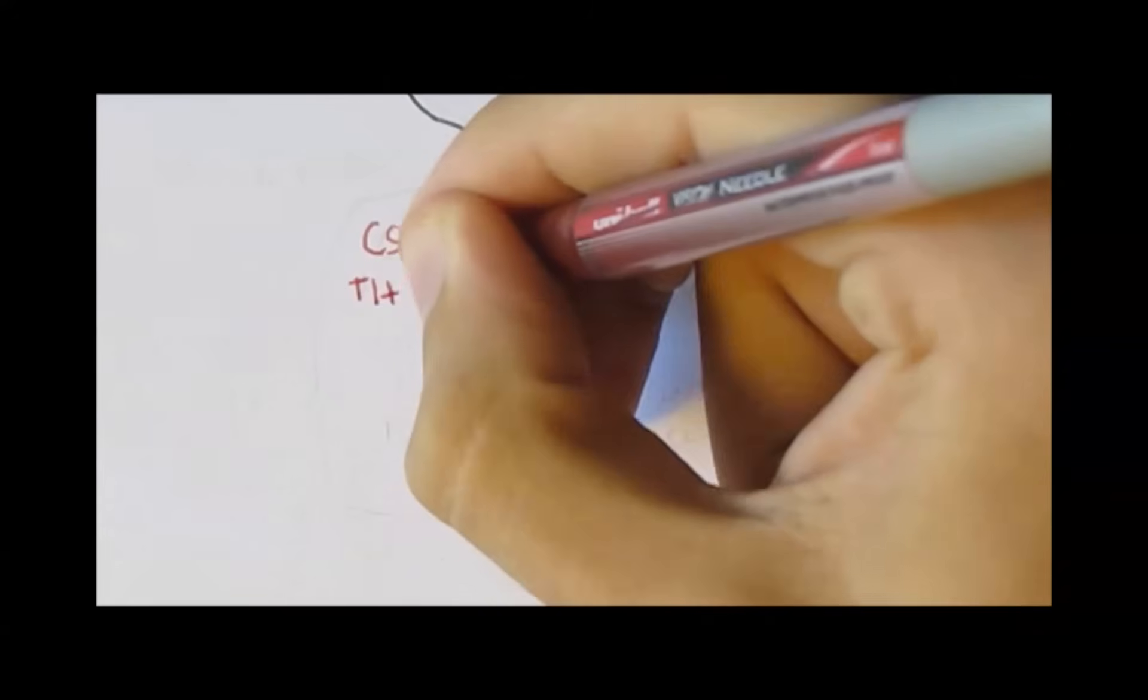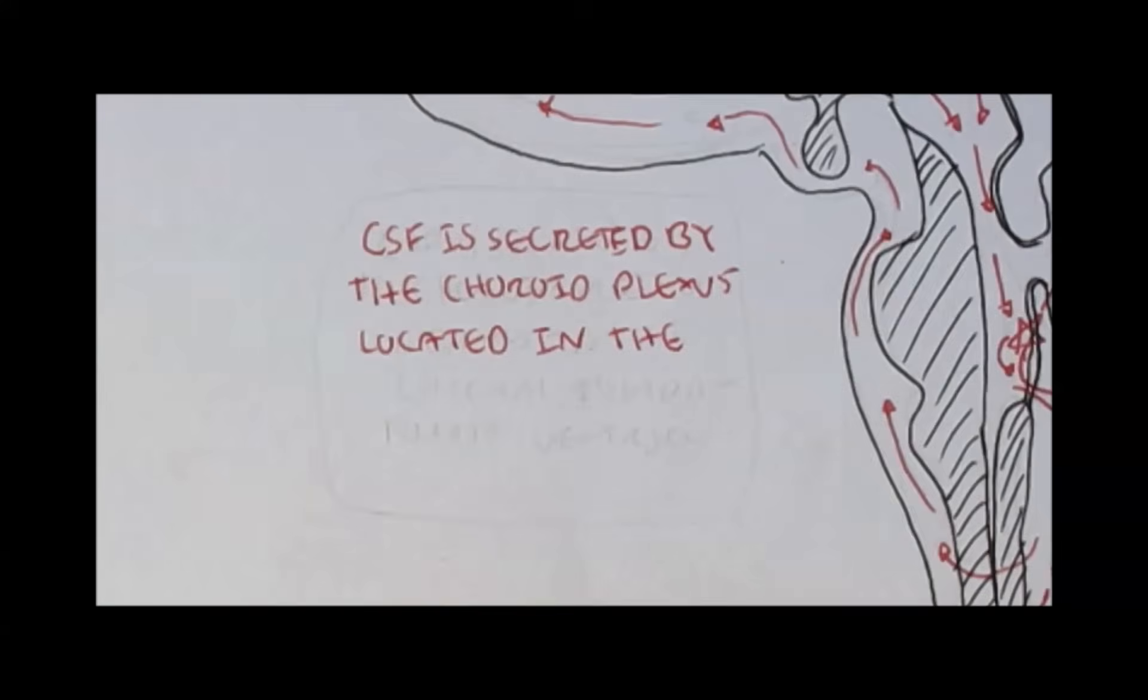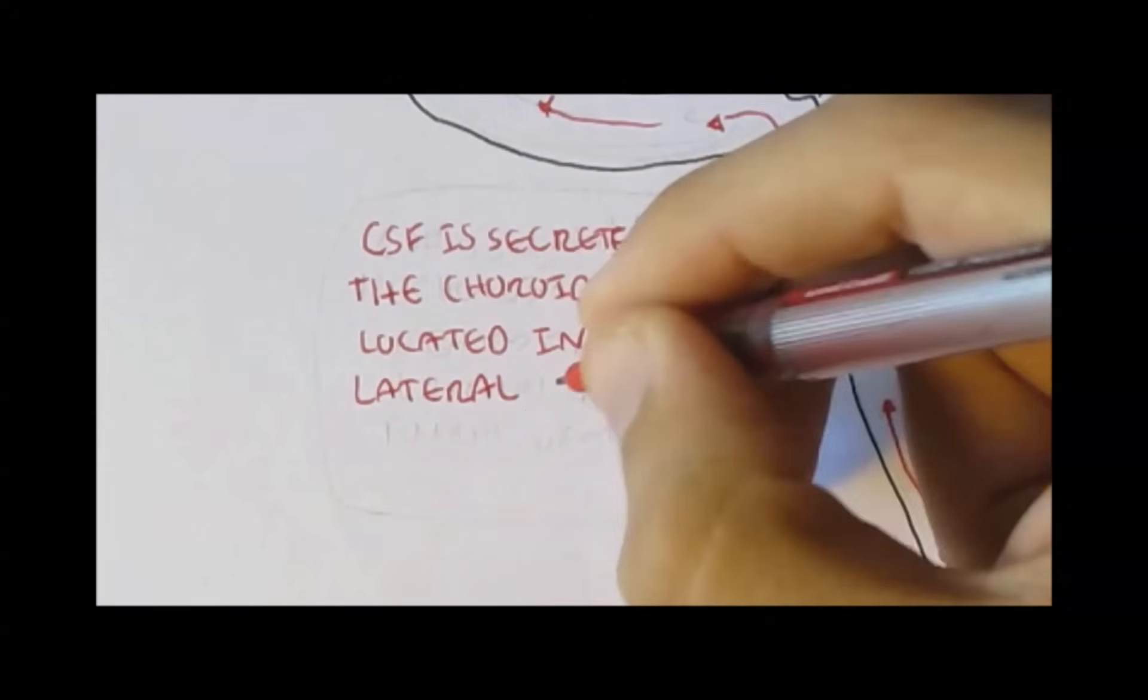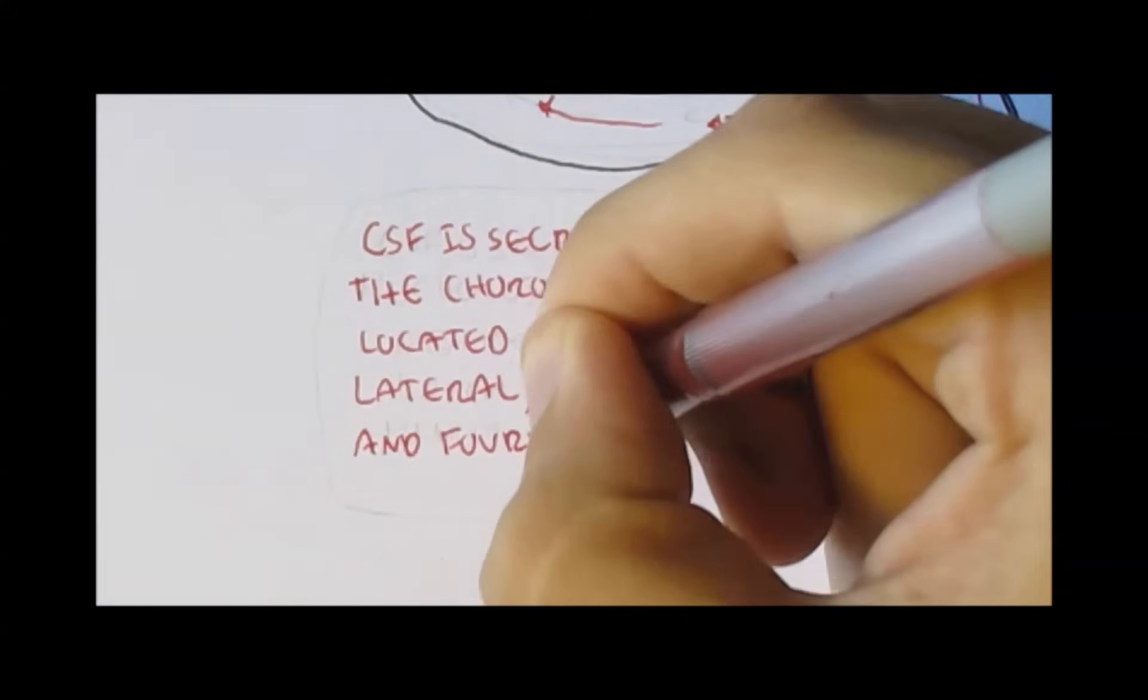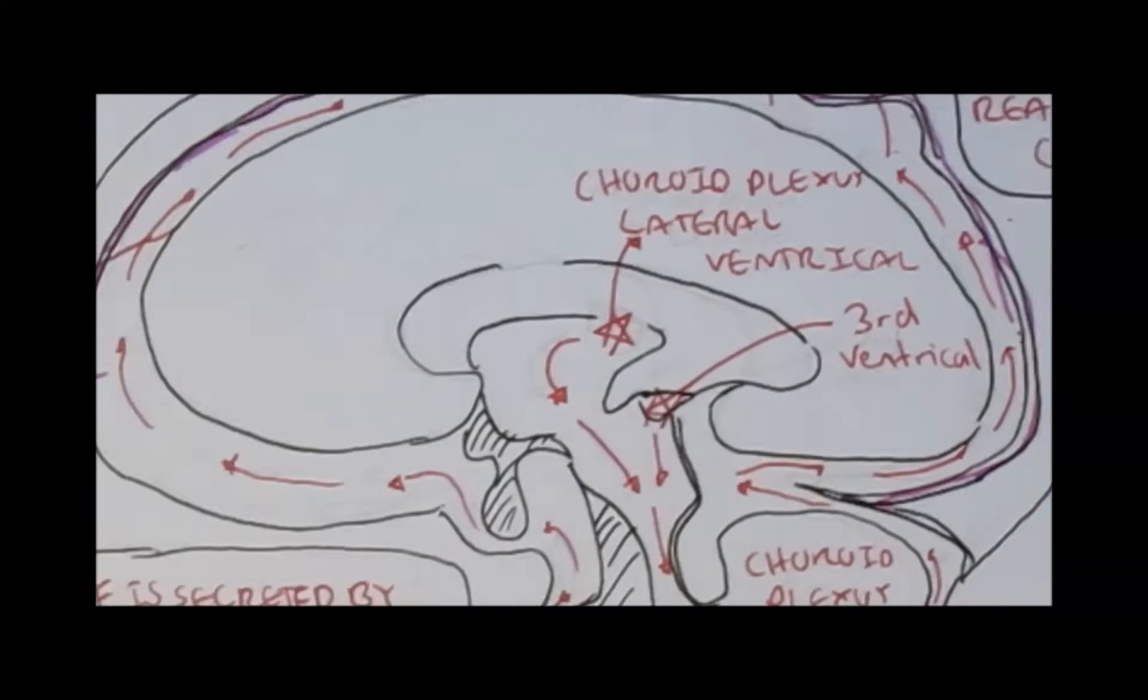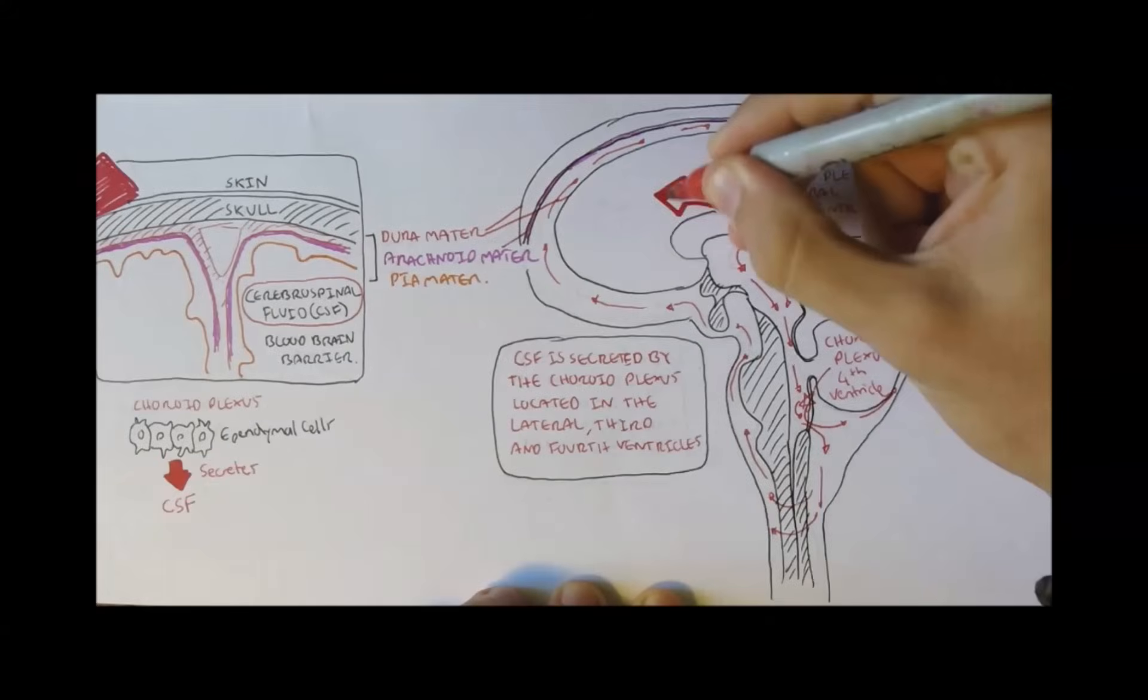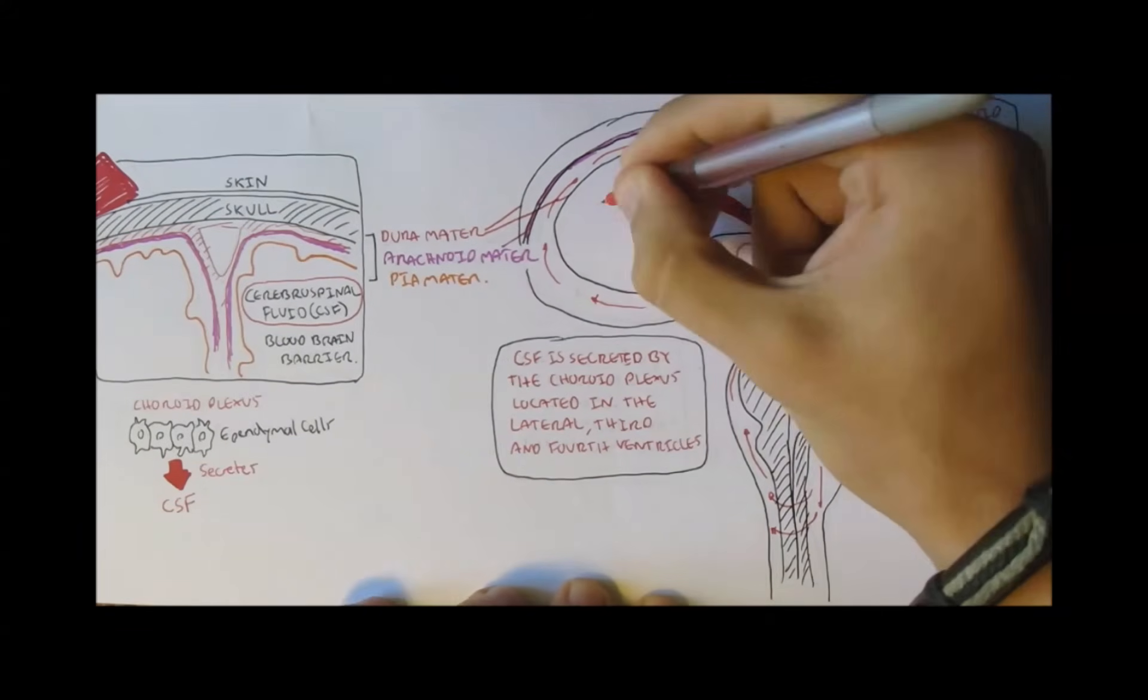Just recapping, the CSF is secreted by the choroid plexus, located in the lateral ventricle, the third ventricle, and the fourth ventricle, which are located here, here, and here. Now let's zoom into one of these ventricles to see how secretion takes place.